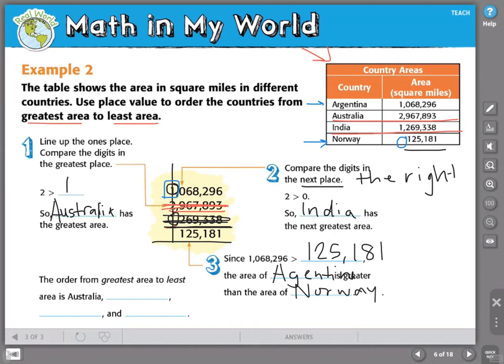So, if we order the countries from greatest area to least area, Australia is in first place. Second place we have India. Next, Argentina. And finally, Norway.